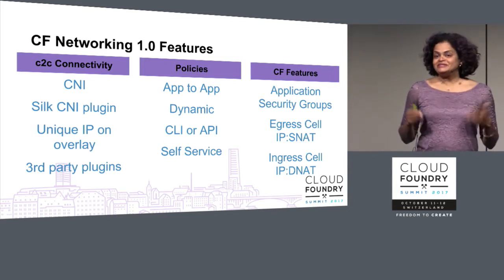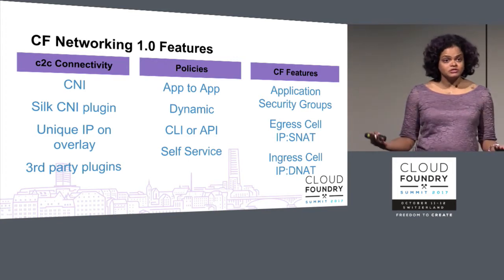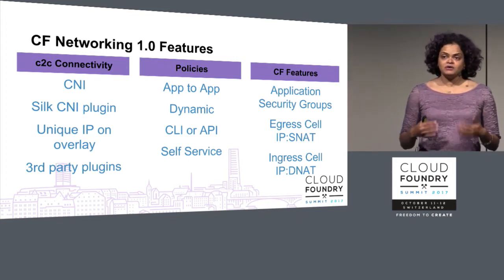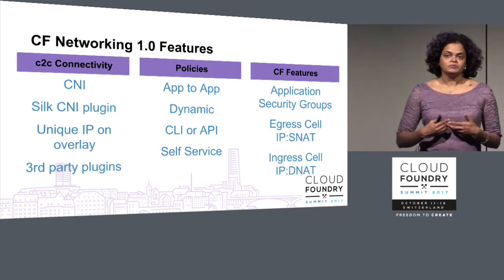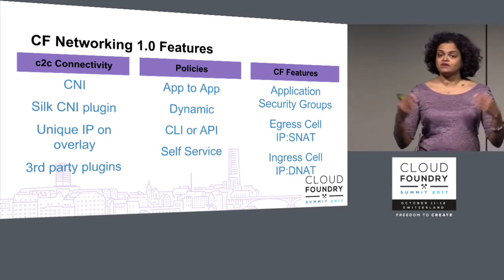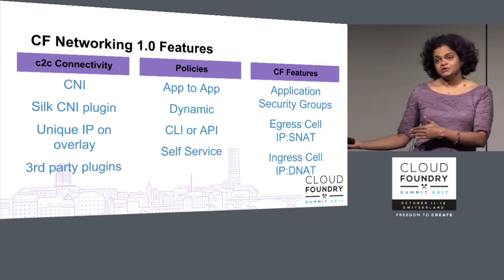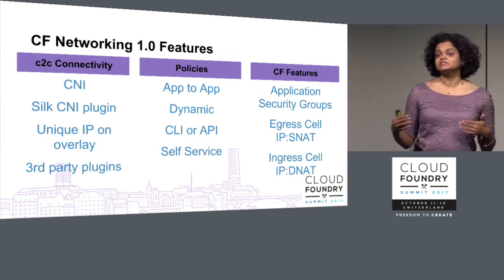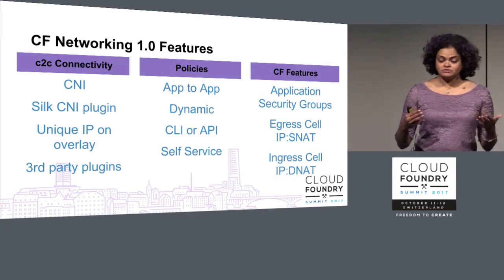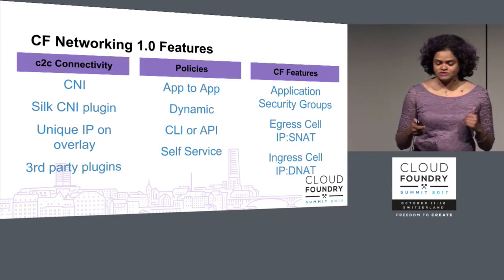There are some things we didn't change but look forward to improving in the future: how we can make application security groups better, and the traffic path through the Go router and outbound traffic — both of those still use NAT. Those are also things we're looking at to see how we could improve those traffic paths.